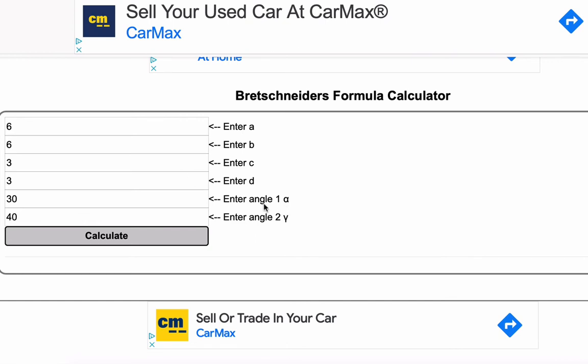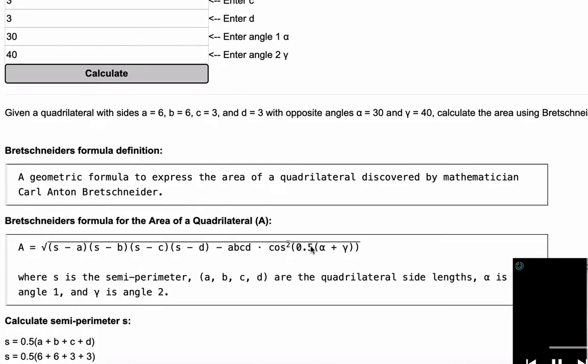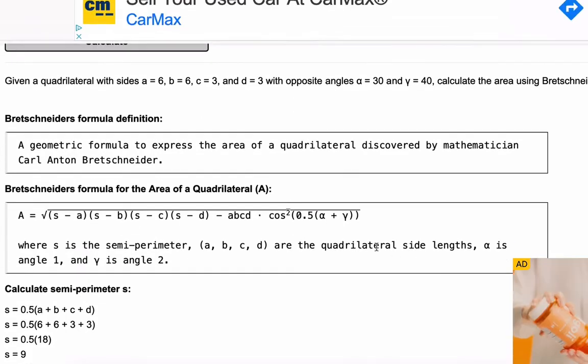Alpha is your first angle, and gamma is your second angle. Once you determine these six inputs, you press calculate, and we will walk you through the calculation.